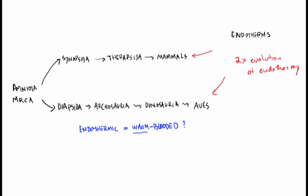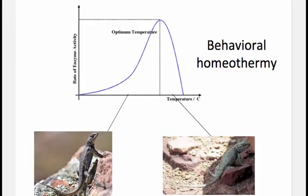Another related but not identical term is homeothermic. Homeothermy means homeostasis of body temperature — maintaining a constant setpoint — which is slightly different from endothermy, which refers to body temperature being generated from inside. Ectothermic animals get their elevated body temperature from the outside, but an ectothermic animal can also be homeothermic if it maintains its body temperature behaviorally. A lizard that basks in the sun and runs its body temperature close to 37–40 degrees is behaviorally homeothermic.